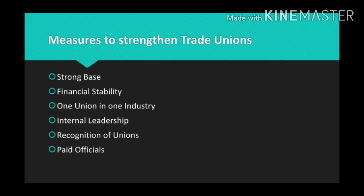The steps are: strong base, financial stability, one union in one industry, internal leadership, recognition of unions, and the last is paid officials. Let's see what each of these topics means.